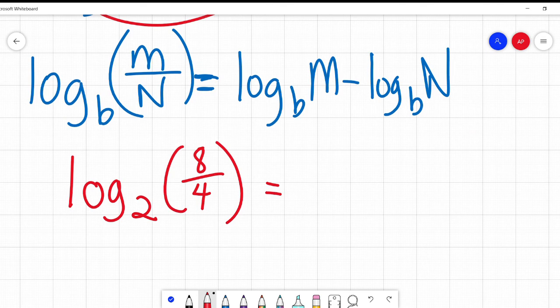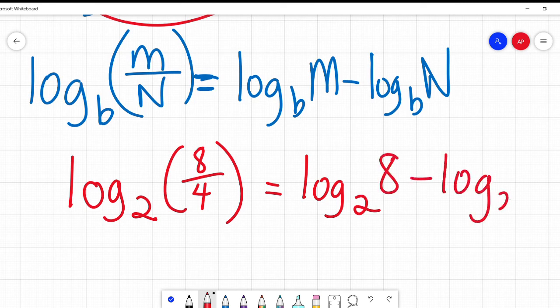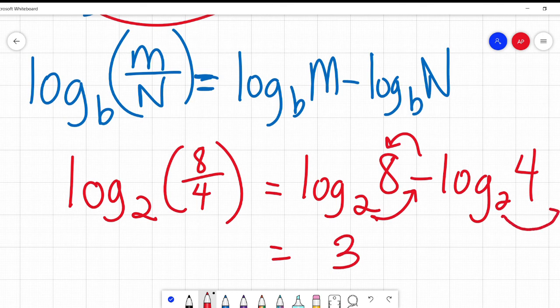But let's write it out the long way and say log base 2 of 8 minus log base 2 of 4. 2 to the power of what equals 8? 3. And 2 to the power of what equals 4? 2. 3 minus 2? 1. Same answer. We're back to 1 again. Imagine that. Fancy that.